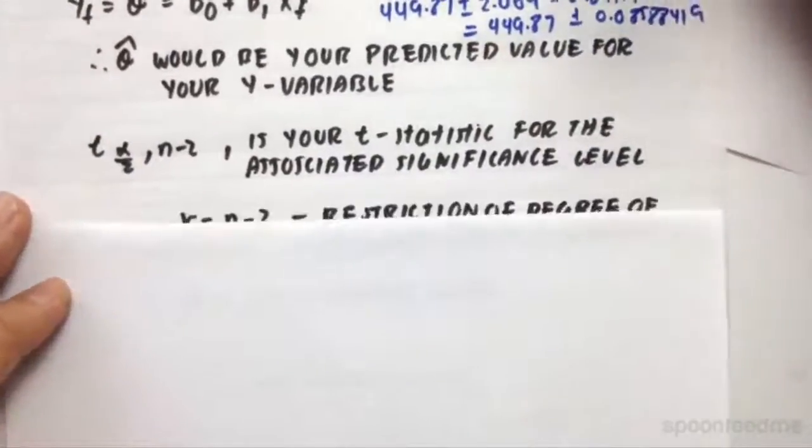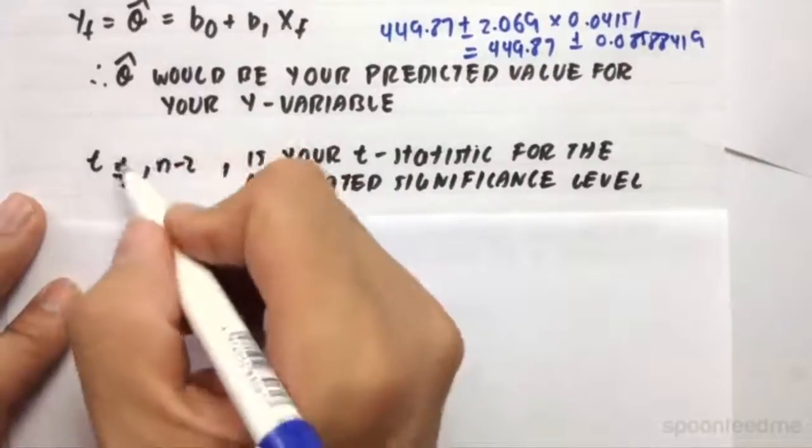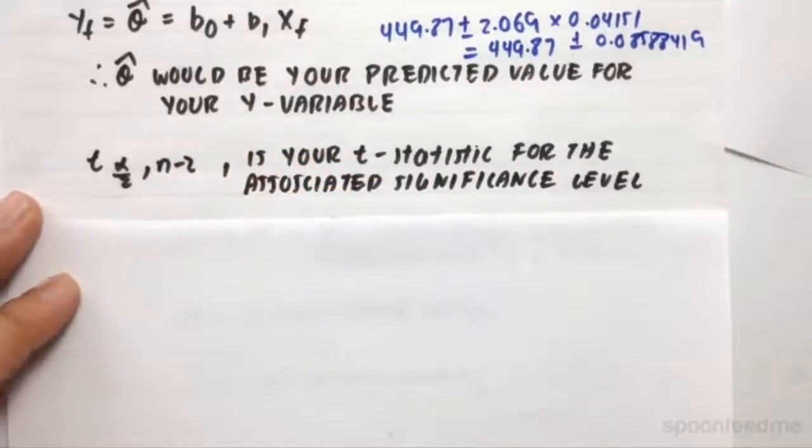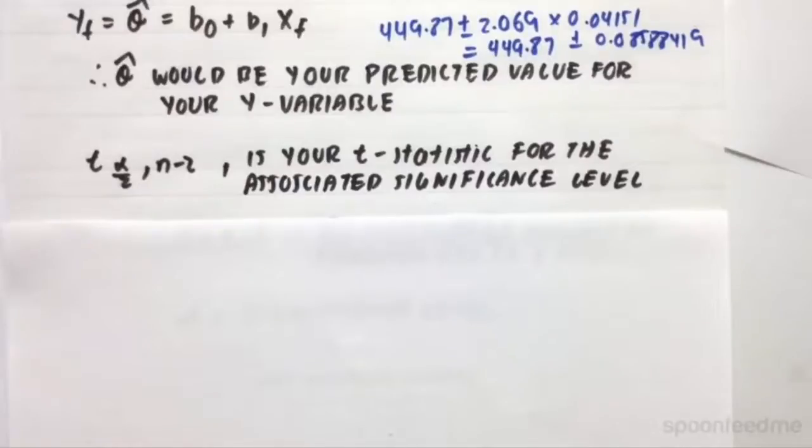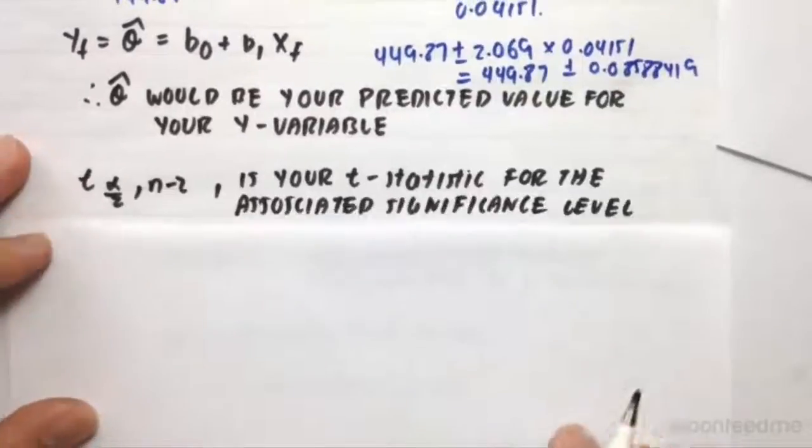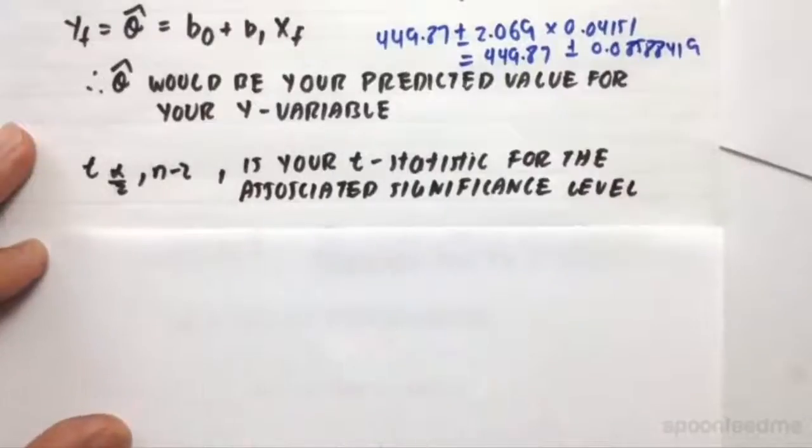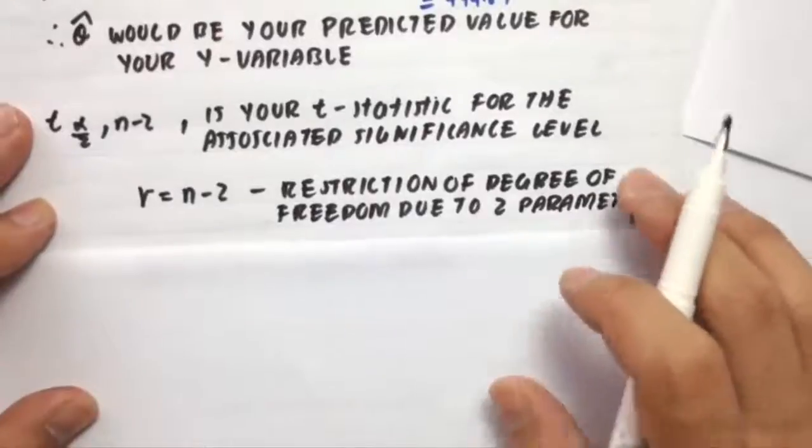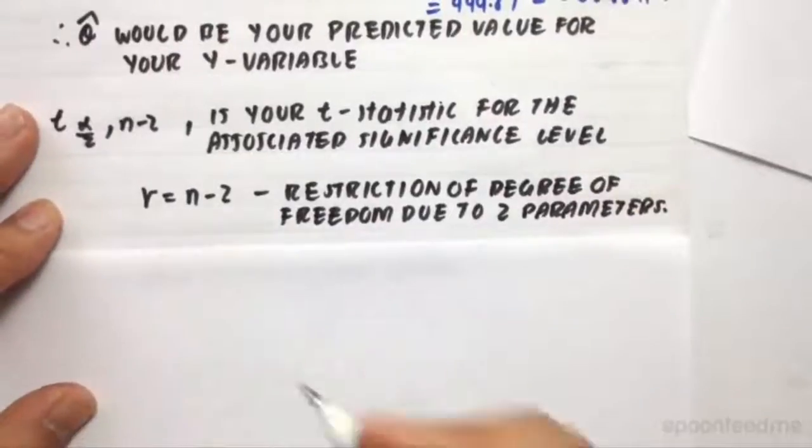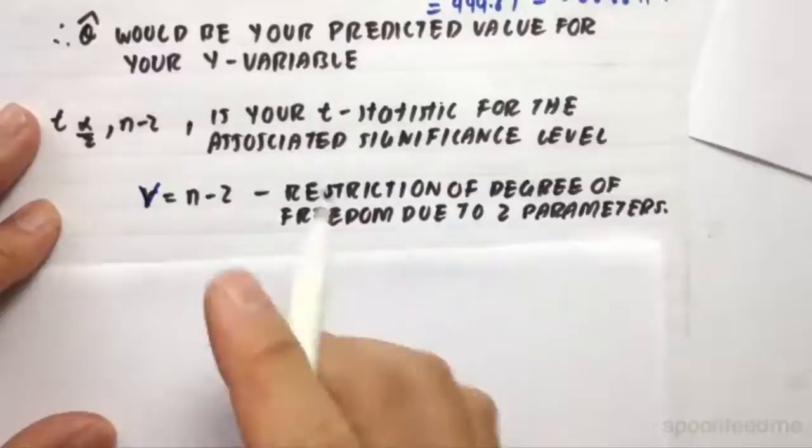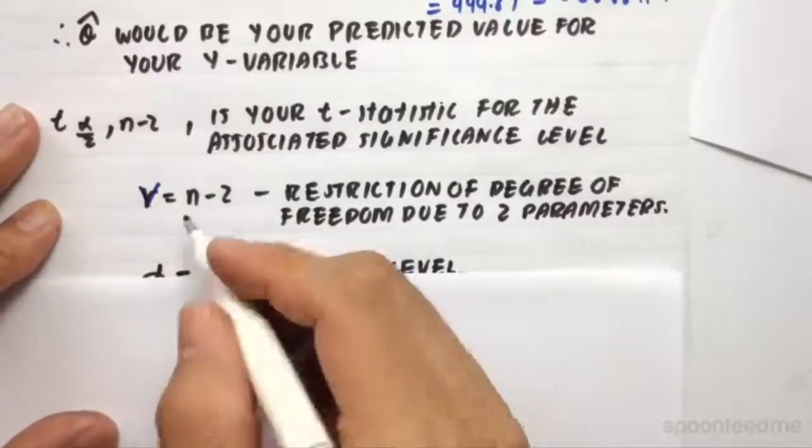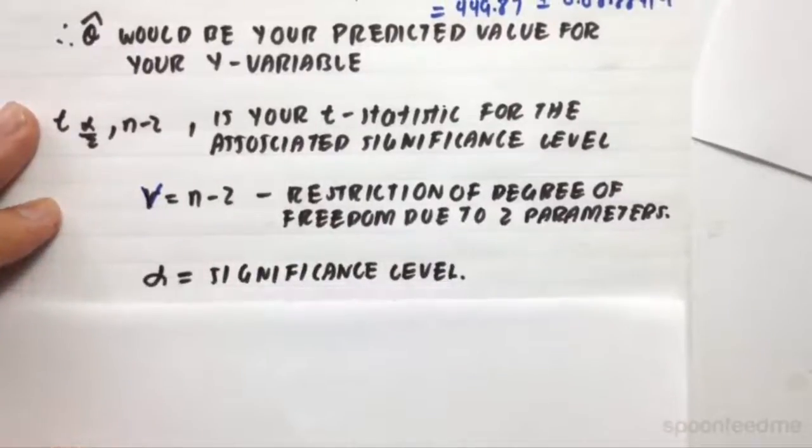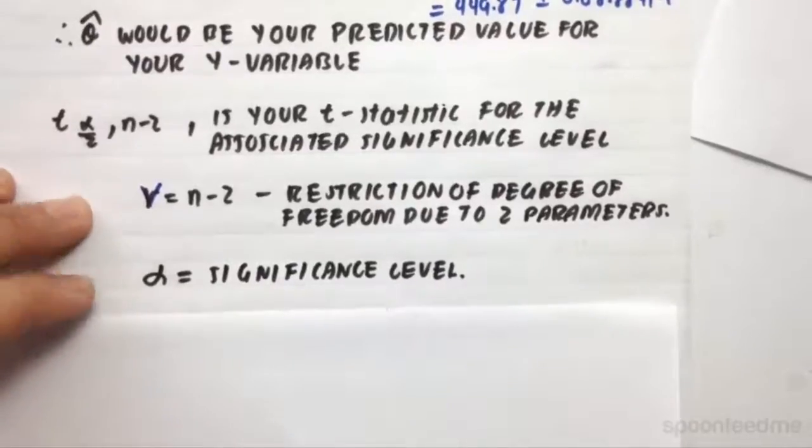Alrighty. So just explaining this again. So the T statistic is T with alpha over 2, because again, we're doing it with confidence levels. So therefore there are 2. It's a two-tailed test. And then n minus 2. So it's your T statistic for the associated significance level. And then after that we need to do the degrees of freedom, that is actually a V, not an R. And then it's n minus 2. So the sample size, which is 25 minus 2, due to our parameters. And then lastly, the significance level. So that's the end of the video today, guys. I hope you learned something. Thank you.